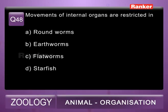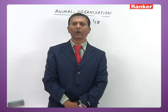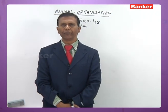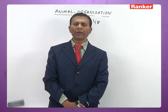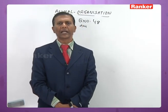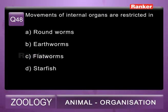Question 48: movement of internal organs is restricted in A) roundworms, B) earthworms, C) flatworms, D) starfish. In flatworms (Platyhelminthes), the entire body cavity is deposited with parenchyma or mesenchyme. As a result, the movement of body parts is restricted — one of the disadvantages of acoelomates. The 48th question correct answer is C, flatworms.